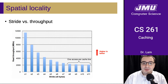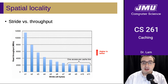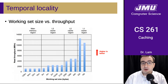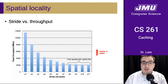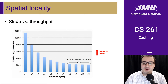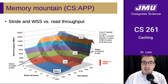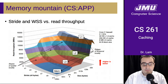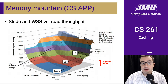What this all leads to is we have two sets of experiments: working set size versus throughput, and stride versus throughput. The authors of our textbook observed that you can put these sets of experiments together into a three-dimensional graph. You end up with a picture where stride is on one axis, working set size is on another axis, and the data points graphed in the third dimension are the read throughput.